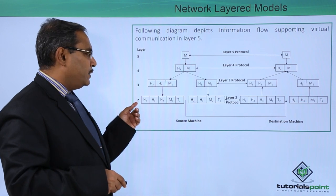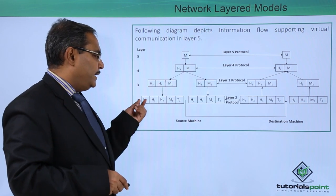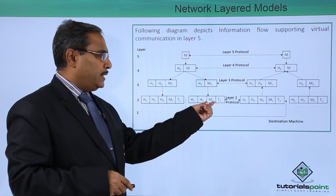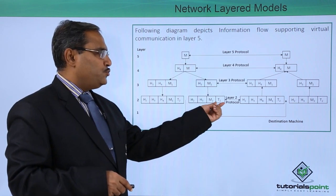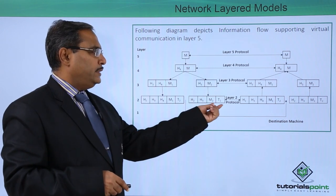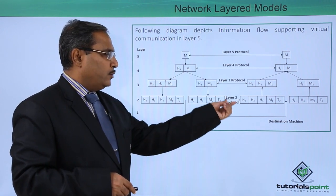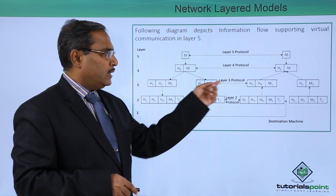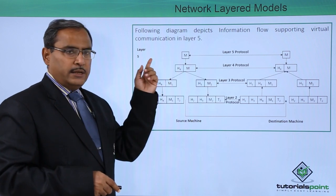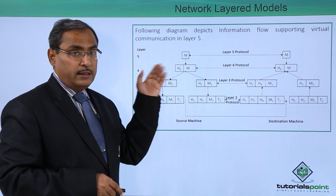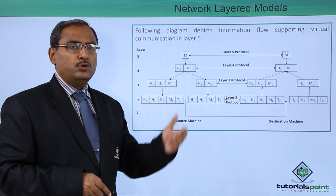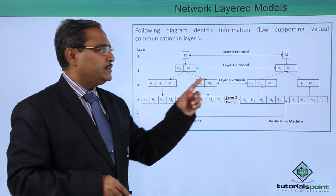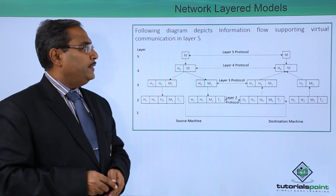At layer 2, header H2 is added along with H3, M2, and a trailer T2. So at this level we have a header, the encapsulated data, and a trailer. Layer 2 protocol handles communication between layer 2 entities, and layer 3 protocol handles communication between layer 3 entities. Similarly, layers at the same level communicate through their respective protocols, and the data flows from source machine to destination machine through the physical media.